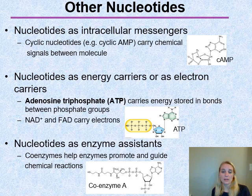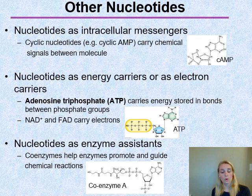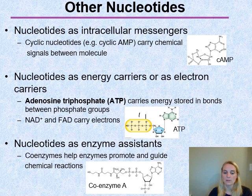There are also smaller nucleotide derivatives that are very important for cellular processes. Some are used as intracellular messengers, like cyclic AMP, delivering messages within the cell. The major energy currency of the cell is a molecule called ATP — adenosine triphosphate — which looks just like a nucleotide but has three phosphate groups instead of one. And some nucleotide derivatives are coenzymes or assistants helping with chemical reactions, like coenzyme A, which is used in your cellular respiration processes.